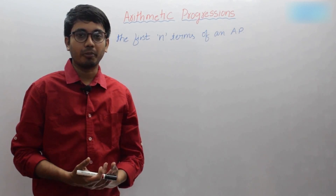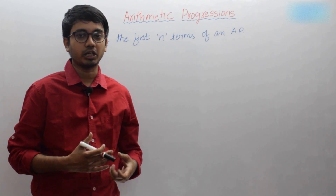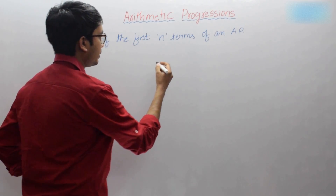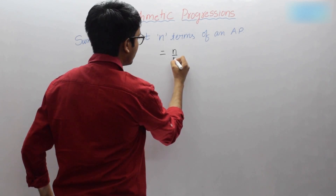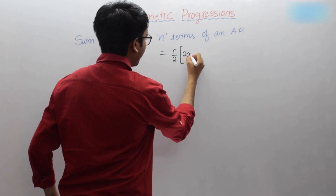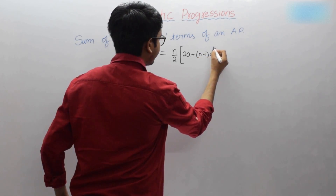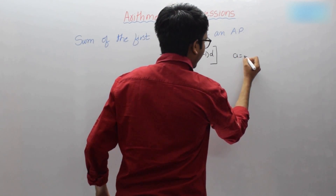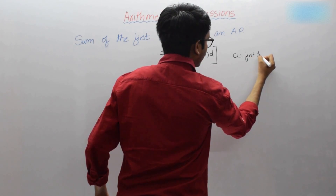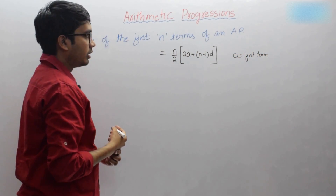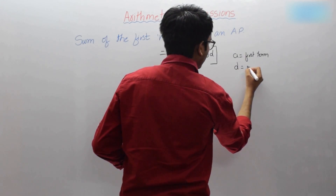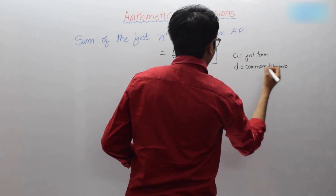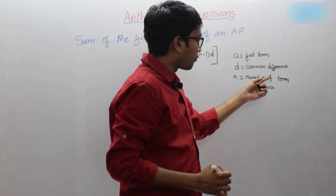In this session we will learn about the formula for the sum of the first n terms of an arithmetic progression. The sum of the first n terms is n by 2 into 2a plus n minus 1 into d. Here, a is the first term in the arithmetic progression, d is the common difference, and n is the number of terms in the series.